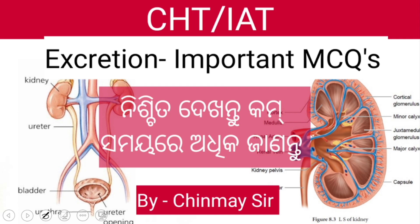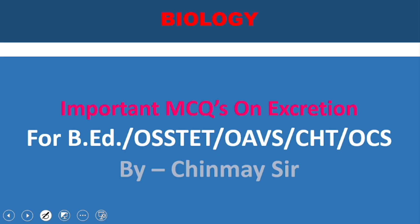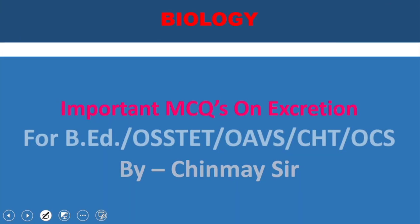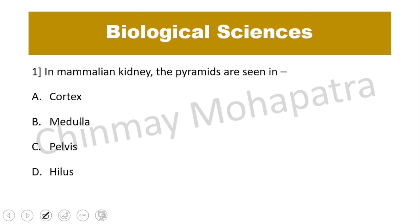Question number 1: In the mammalian kidney, where are the pyramids seen? The pyramids are seen in the medulla part.